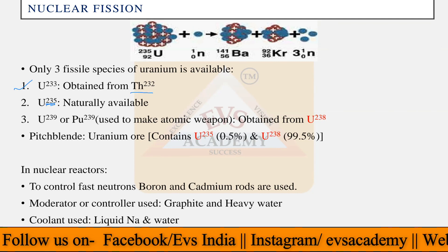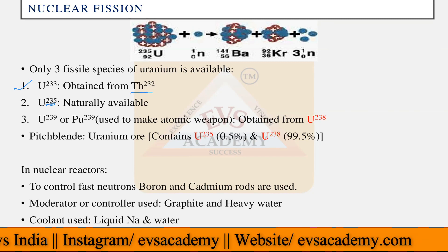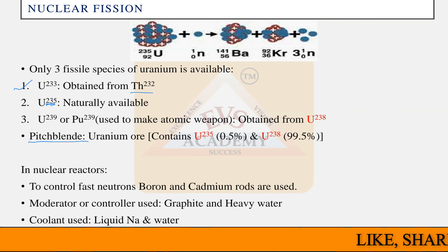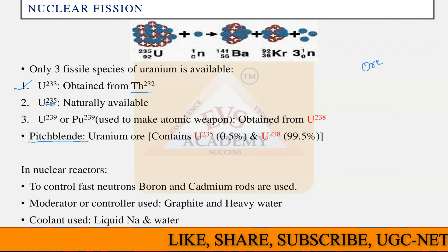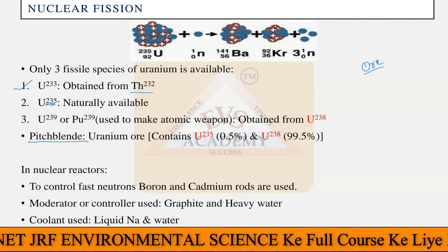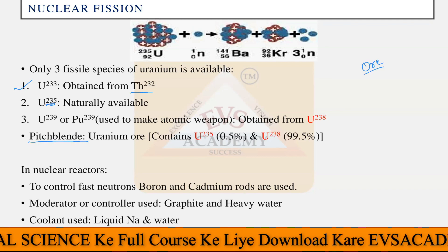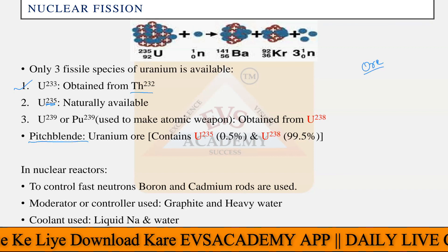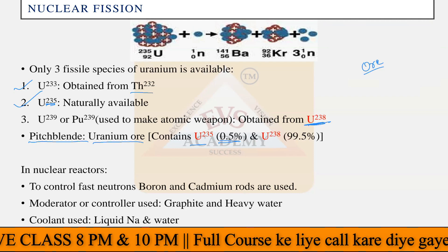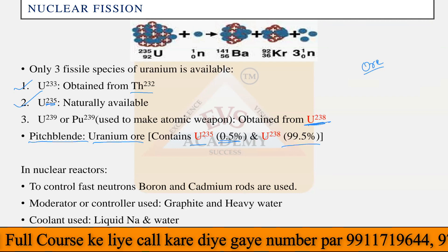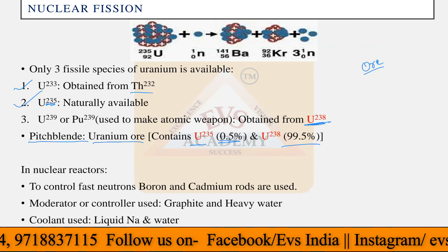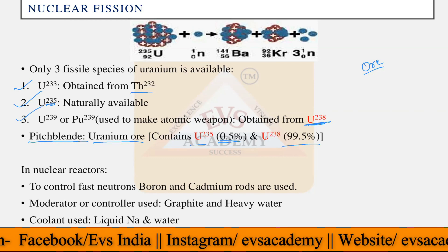Uranium-239 and plutonium-239 are used to make atomic weapons and are obtained from uranium-238. The ore of uranium is called pitchblende. Pitchblende contains uranium-235 at only 0.5% naturally, and uranium-238 in abundance at 99.5%. Uranium-238 is used to create uranium-239 or plutonium-239, and uranium-233 is only obtained from thorium-232. Remember these three different uranium nuclei.